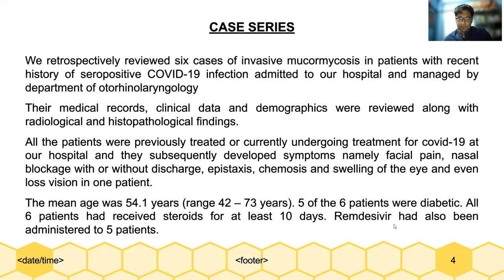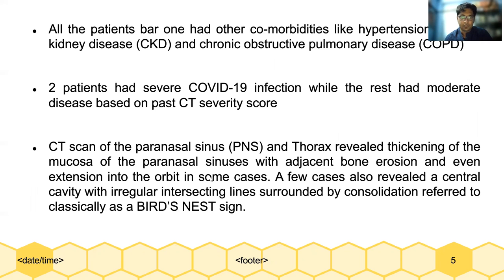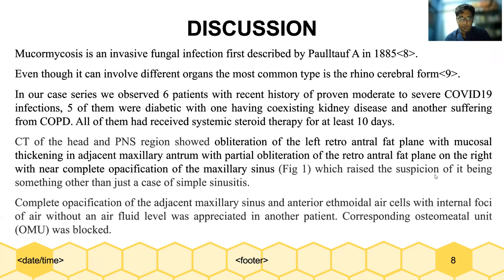The mean age of involvement was around 54 years. Five of the six patients were diabetic. All six had received steroids for at least 10 days, and remdesivir had been administered to five patients. All patients except one had comorbidities like hypertension, CKD, and COPD. Two of the patients had severe COVID-19 infection while the rest had moderate infection based on CT severity score. CT of the paranasal sinuses and thorax revealed thickening of the mucosa of the paranasal sinuses with adjacent bone erosion and even extension into the orbit in some cases. A few cases also revealed a central cavity with irregular intersecting lines in the lung surrounded by consolidation, referred to classically as the bird's nest sign. This is a representation of the case findings in tabular form, which has been discussed further.